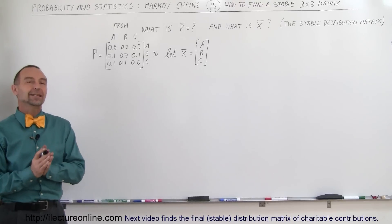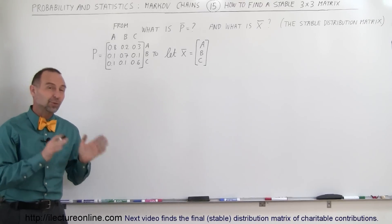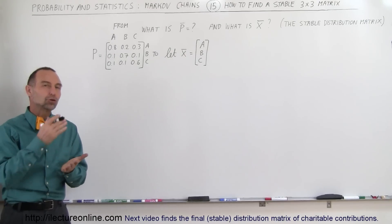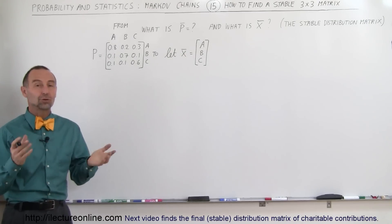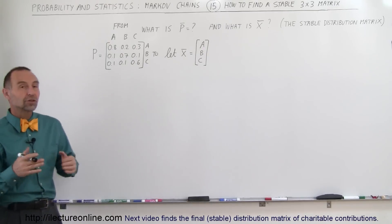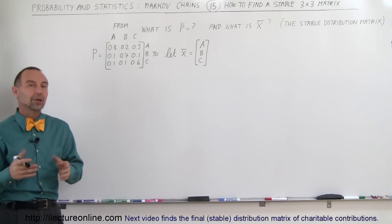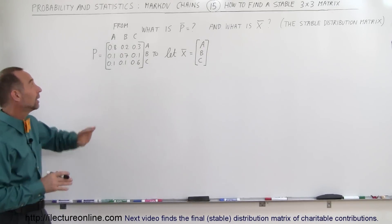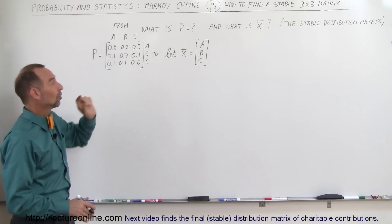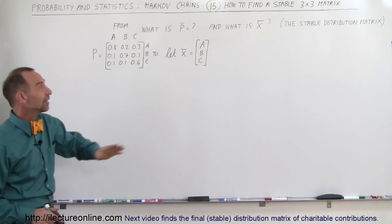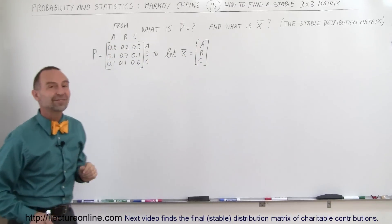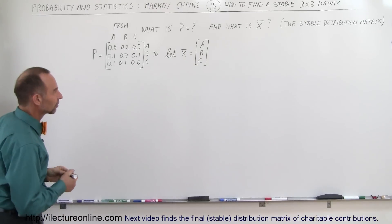Welcome to our lecture online. In the previous videos we saw how to find the stable distribution matrix using a 2x2 probability matrix in a 2x2 states situation. Here we're going to show the same example but with a 3x3, meaning there are three states A, B, and C, and we're going to try to find the final distribution matrix for those three states.